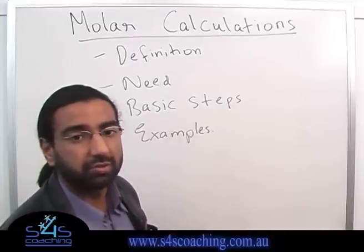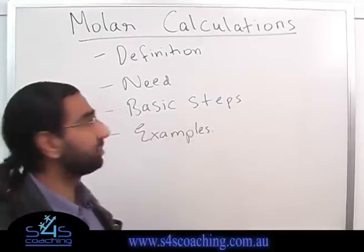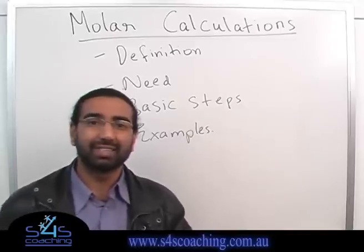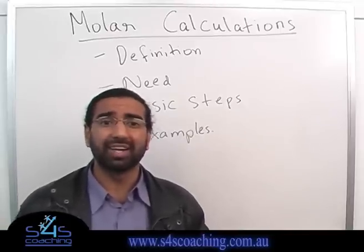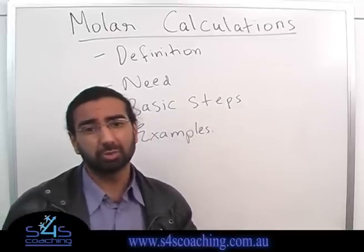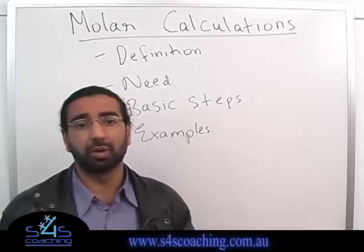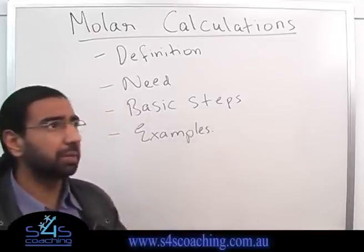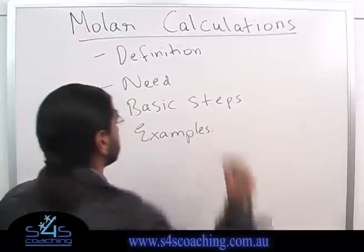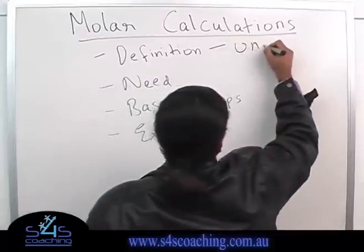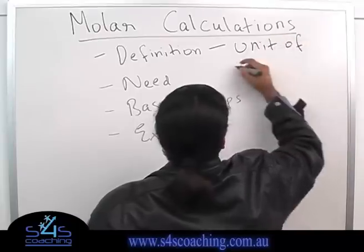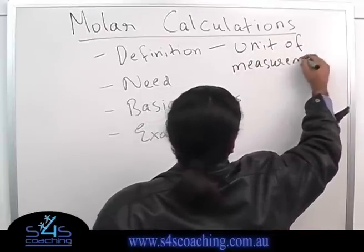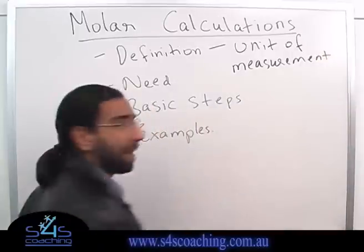The first question: moles — a definition. Moles is basically defined as any substance that contains Avogadro's number of entities, which is 6.022 times 10 to the power of 23. Simply put, moles is a unit of measurement. We use moles to measure things.